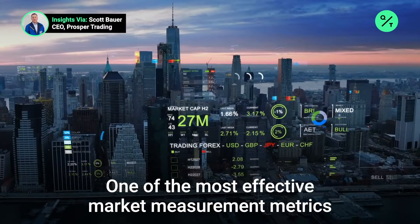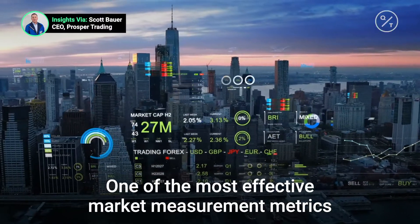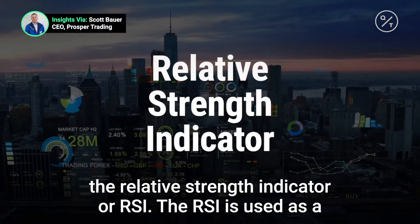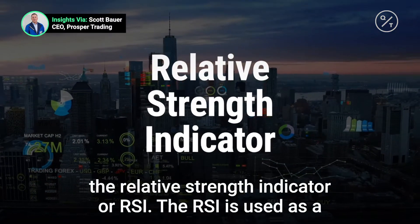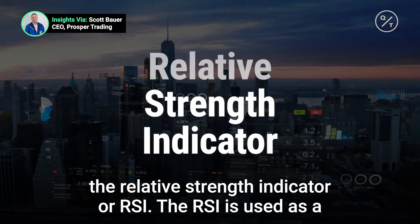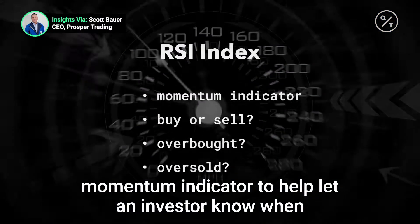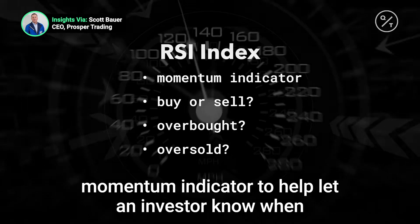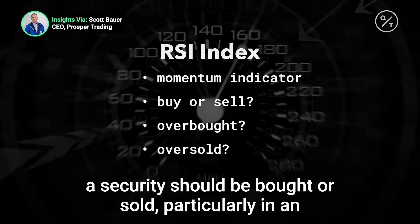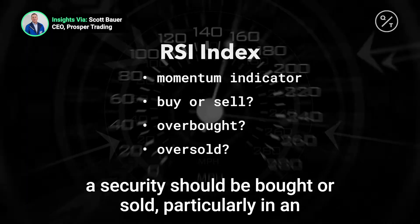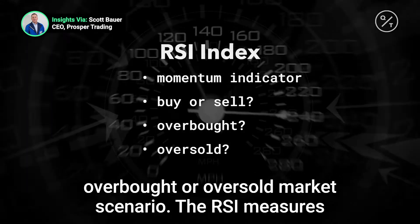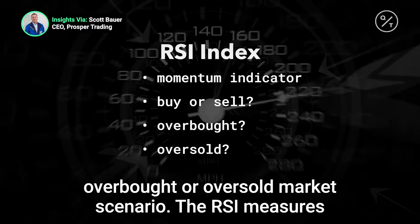One of the most effective market measurement metrics is the Relative Strength Indicator, or RSI. The RSI is used as a momentum indicator to help let an investor know when a security should be bought or sold, particularly in an overbought or oversold market scenario.